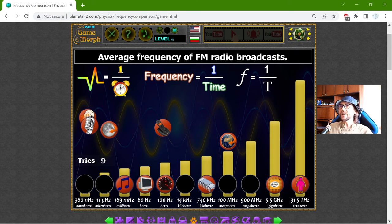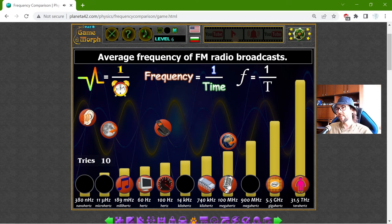Ah, this is common. The average frequency of FM radio broadcast. Ah, 100 MHz. Yes. I remember it's around 100, 101, 108 something.